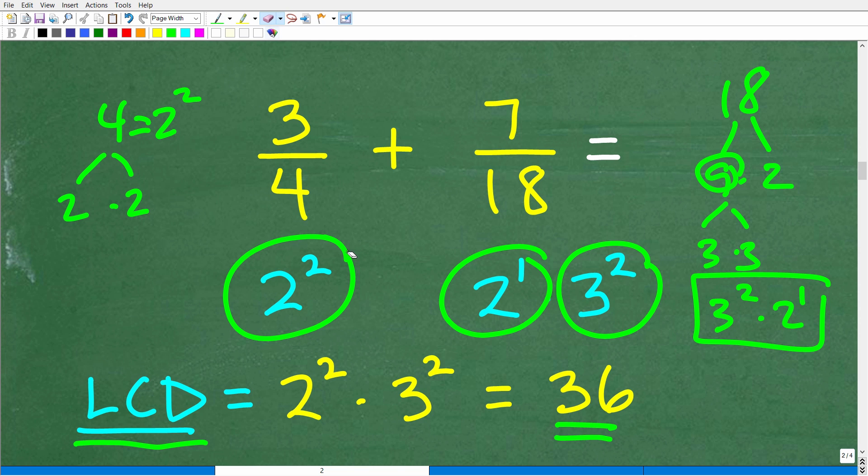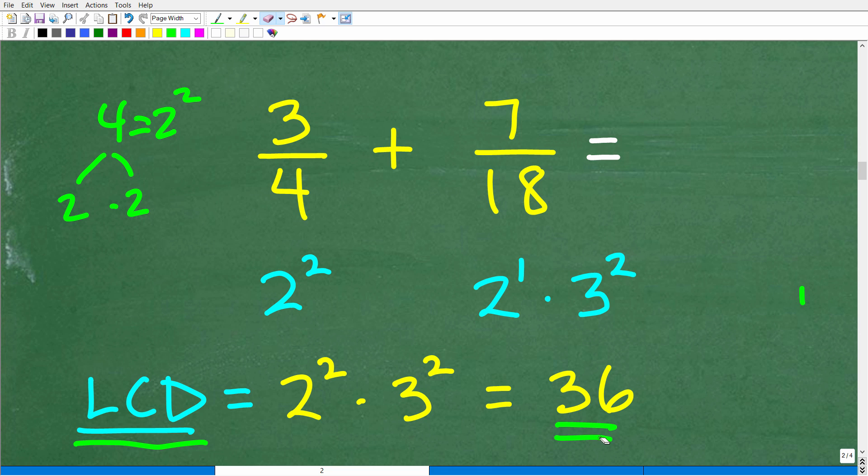So 3 times 3, these numbers are prime. So we can think of 18 as 3 squared times 2 to the first. Remember, we want all the prime factors of our denominator. So now we have 2 to the first times 3 squared. That is 18. Alright, so now we can easily identify the LCD. Now the way this works is you're going to take the highest power. Well, let me kind of back up here. You need to have each of the numbers of these prime factors represented in the LCD as a product.